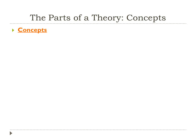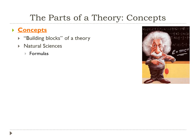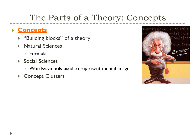It's important that we talk about the parts of a theory and break it down. The first thing we need to talk about are concepts — concepts are the building blocks of a theory. In the natural sciences we often use formulas as our concepts, like Einstein would use. But in the social sciences we aren't using formulas; we're using words or symbols that represent some type of mental image. Things like crime and gender are concepts we use in the social sciences when building our theories.